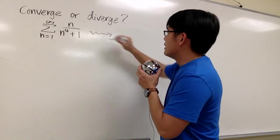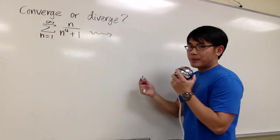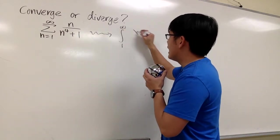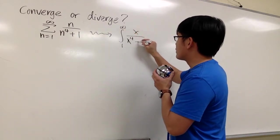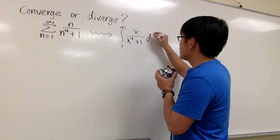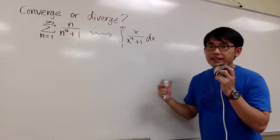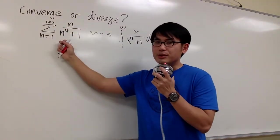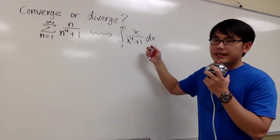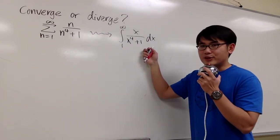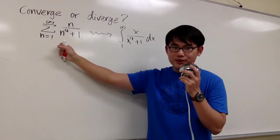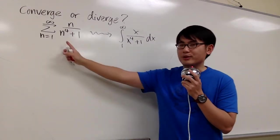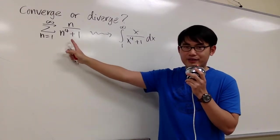We'll consider this improper integral: the integral from 1 to infinity of x over x to the fourth power plus 1 dx. The connection between this improper integral and this infinite series is that if this converges, we can also say this converges. And if this diverges, we can also say that diverges.